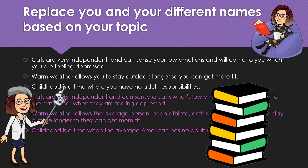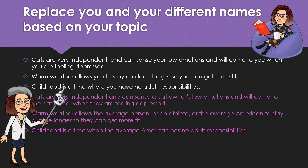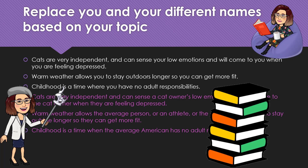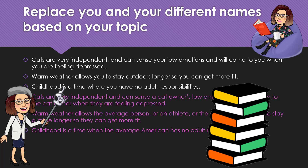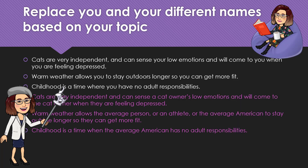Another example: 'Childhood is a time when you have no adult responsibilities' becomes 'Childhood is a time when the average American child has no adult responsibilities.' You can hear the difference in tone and in register. When you're writing an academic paper, you want to sound objective and professional.